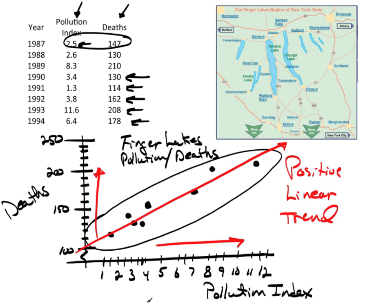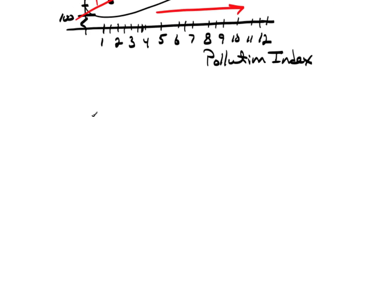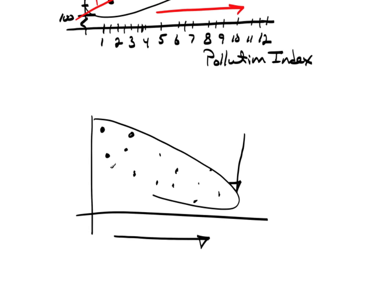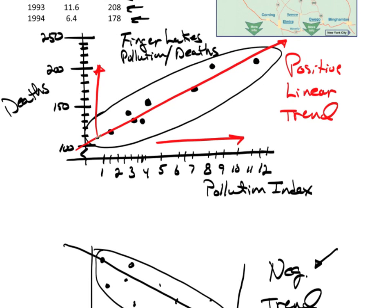Now, if we saw a trend that was negative, it would look like this. As the horizontal axis increases, the vertical axis values decrease, in general. And what I'm getting is this negative trend. If we think of a line going through the data, the slope of this line would be negative, hence negative trend. Here, if we think of this line going through the data, the slope of this line is positive, hence we have a positive trend.